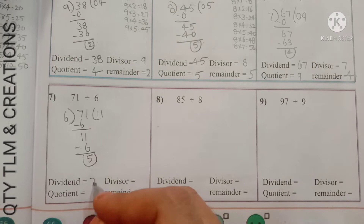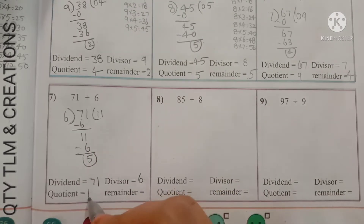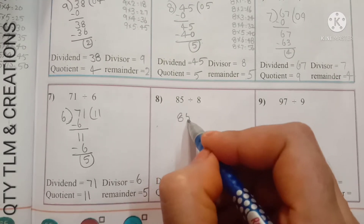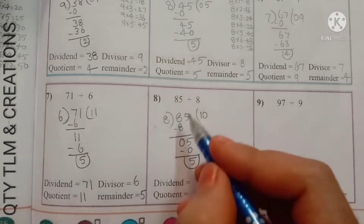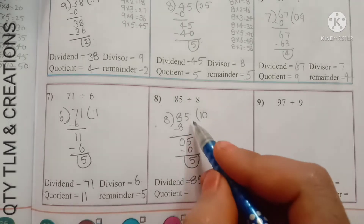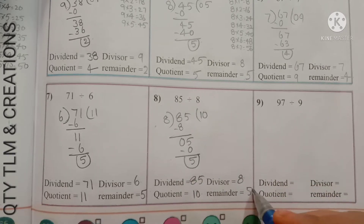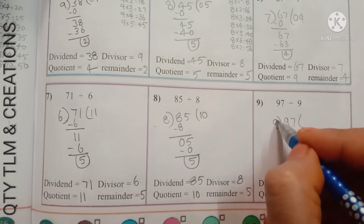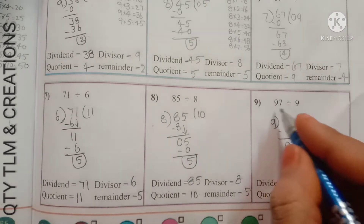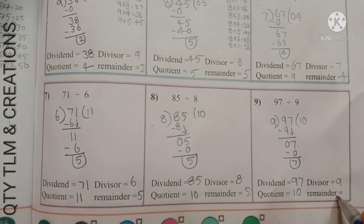Next question: 75 divided by 8. After division, dividend is 75, divisor is 8, quotient is 9, and remainder is 3. Next: 85 divided by 8 — dividend is 85, divisor is 8, quotient is 10, remainder is 5. Next: 97 divided by 9 — dividend is 97, divisor is 9, quotient is 10, remainder is 7.